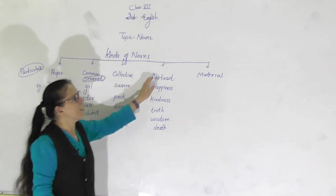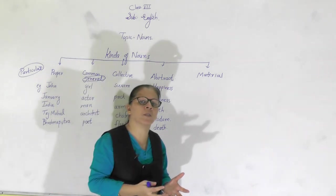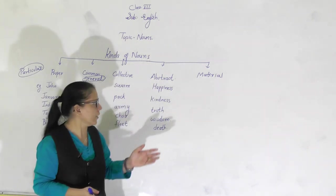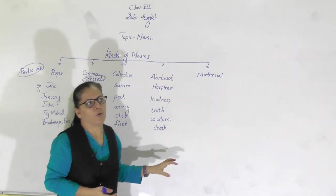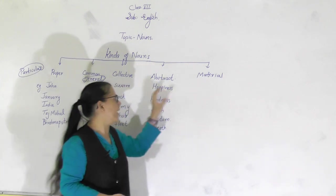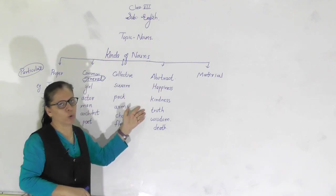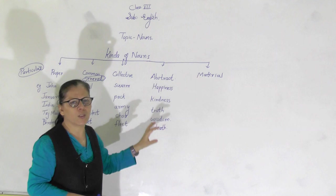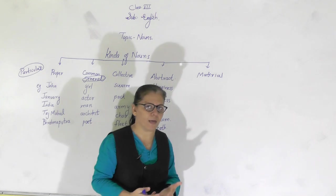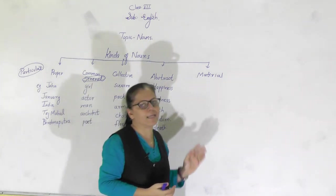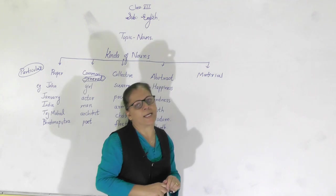Now let us move towards abstract nouns. Abstract nouns are the nouns of our feelings, emotions, or state of being. We cannot see or touch these nouns; we can just feel them, and hence they are called abstract nouns. For example: happiness, kindness, truth, wisdom, death. These are all our emotions, feelings, or states of being. We cannot see or touch them, and hence they are called abstract nouns.